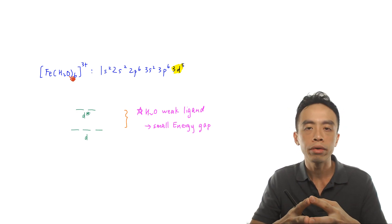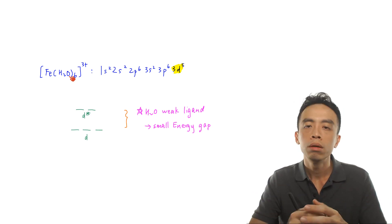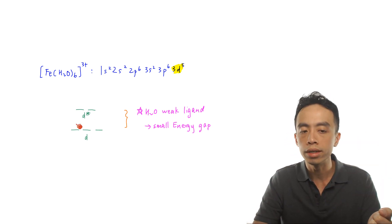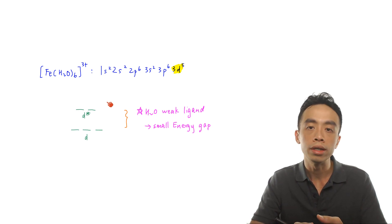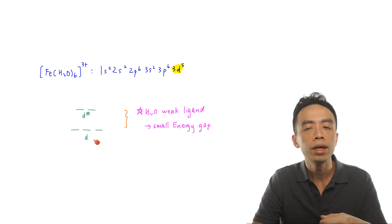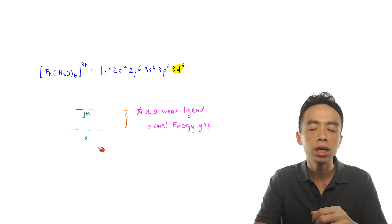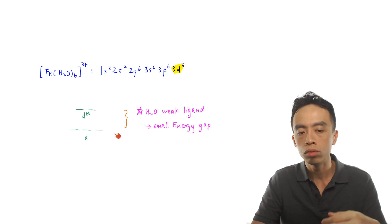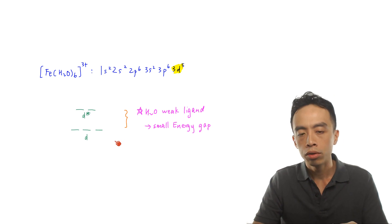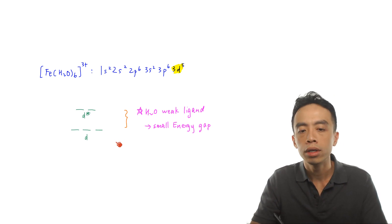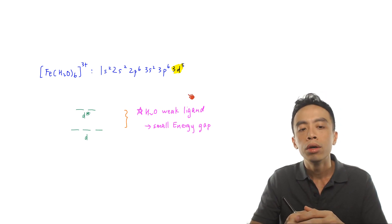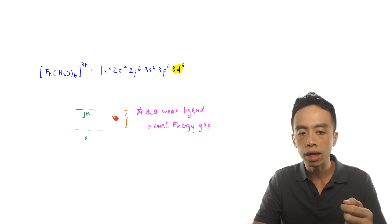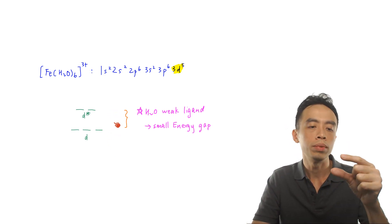Some d orbitals interact more with the ligands due to symmetry, so they are pushed up to a higher energy level — we call this the d* level. The d orbitals that interact less with the ligands remain lower in energy — we call this the d level. For an octahedral complex, the splitting pattern is two orbitals on top and three orbitals at the bottom. Water is a weak ligand, so the interaction is smaller, and the energy gap between d and d* is smaller.